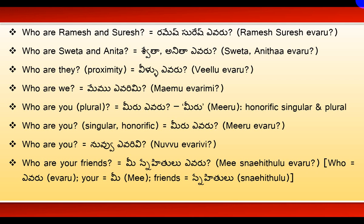Who are your friends? means Mi Snehitulu Yavaru. Here, 'Who' means Yavaru, 'Your' means Me, and 'Friends' means Snehitulu. In all these sentences, we don't use the meaning of 'are' — 'are' means Unnaru, but it is not used.